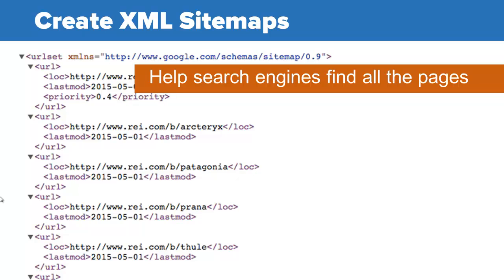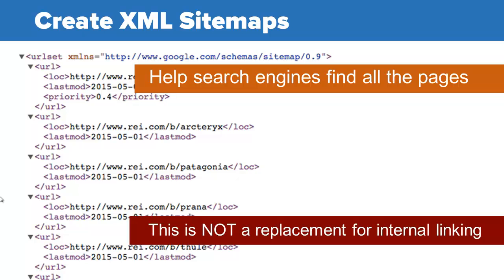Another thing that will help is to create XML sitemaps. This will help Google find those pages that it might have trouble finding. One thing to note — this is not a replacement for internal linking. These XML sitemaps are not going to give you any link juice or link value that your normal internal linking would. It's a good thing to help search engines find those pages, but it's not a replacement for good internal browsable linking.